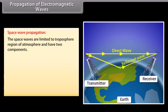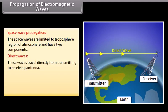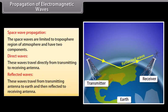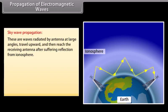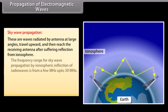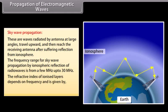Space waves are limited to the troposphere region of the atmosphere and have two components: direct waves, which travel directly from the transmitting to the receiving antenna, and reflected waves, which travel from the transmitting antenna to Earth and are then reflected to the receiving antenna. Sky waves are radiated by antennas at large angles, travel upward, and reach the receiving antenna after reflection from the ionosphere. The frequency range for sky wave propagation is from a few megahertz up to 30 MHz. The refractive index of ionized layers depends on frequency and is given by √(1 − 81/F²).